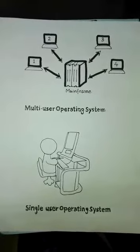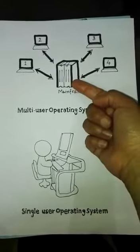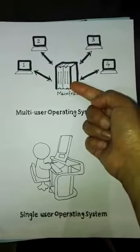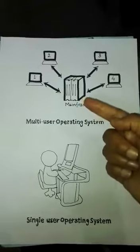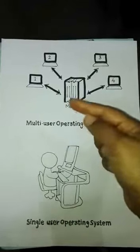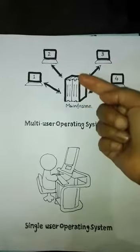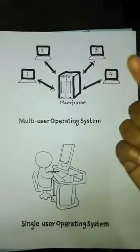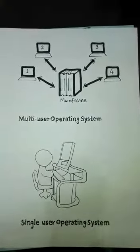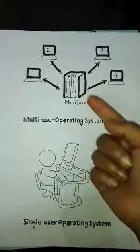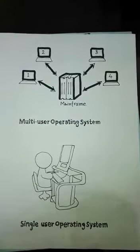Now the question is how? We have a central computer or central processor. MS Paint is installed on that central computer. We have four people who want to use or share it. The central computer is connected with four other computers. At a time, four persons can work on it. These four users can access MS Paint through the main computer, which is connected with four other computers.